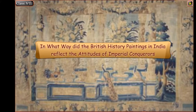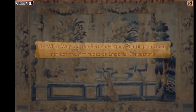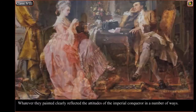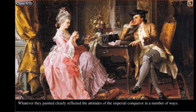In what way did the British history paintings in India reflect the attitudes of imperial conquerors? From the 18th century, a large number of artists and painters came to India along with the British traders and rulers. Whatever they painted clearly reflected the attitudes of the imperial conqueror in a number of ways.